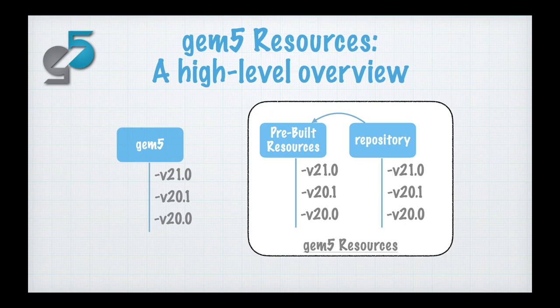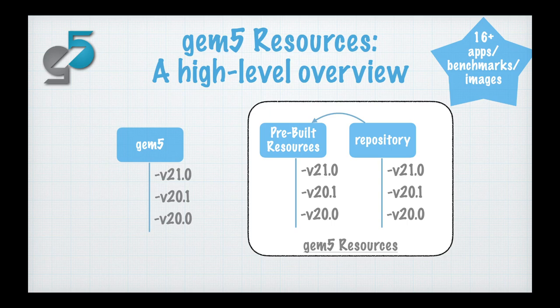So for instance, if you need a Linux kernel binary, you can go to the repository and build it yourself, or you can pull the binary from the pre-built resources on our Google Cloud infrastructure, which is simply a basic download. At time of writing, we have at least 16 apps, benchmarks, and images for full system mode, and many others for bare metal testing and GPU simulations. We're continuing to expand this with more benchmarks, tests, and executables. For each release of GEM5, we ensure that all these benchmarks, apps, and images are compatible with the latest release and tagged appropriately.